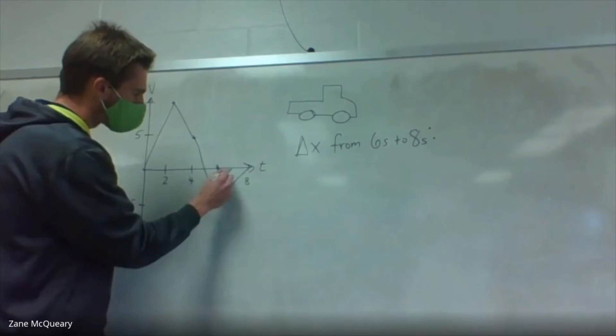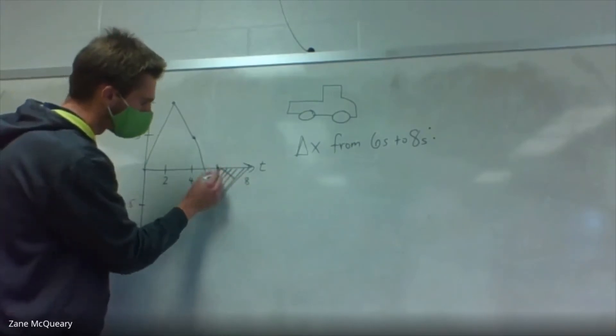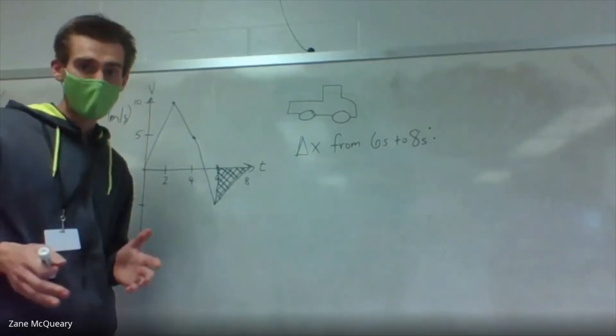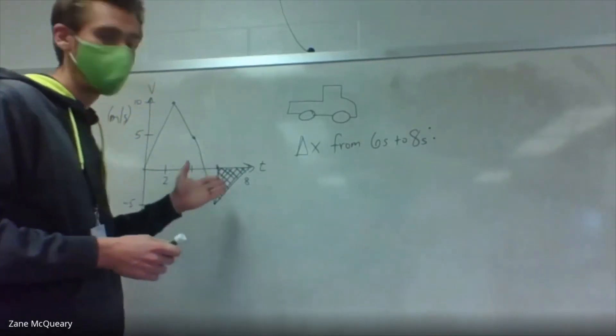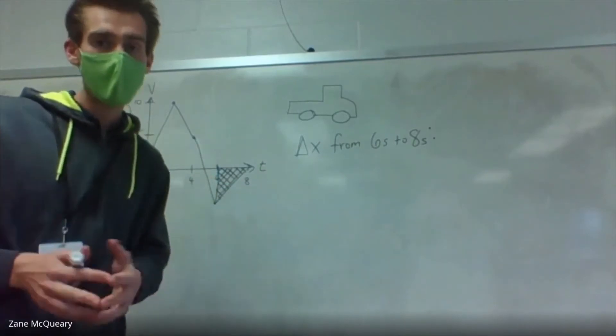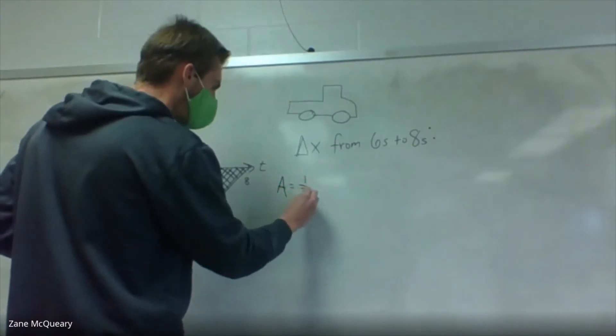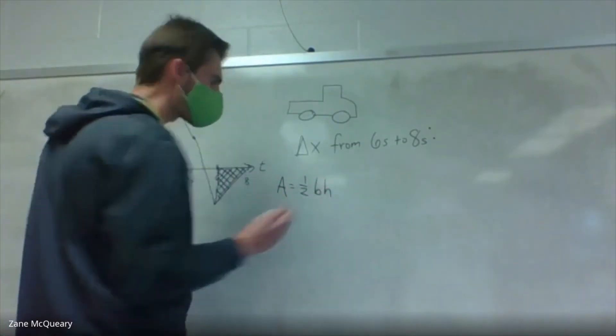We're finding the area inside that little triangle there from your curve, or in this case, a line to your axis. Now we all remember the area of a triangle. So this shouldn't be too bad. The area of a triangle is one half your base times your height.